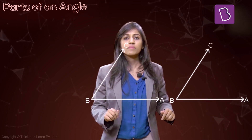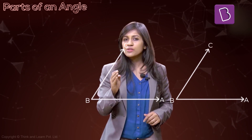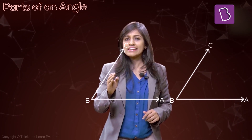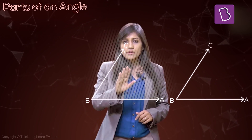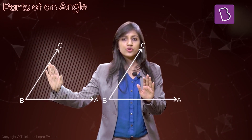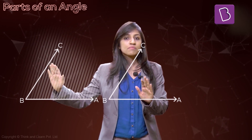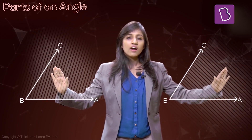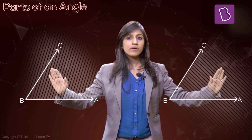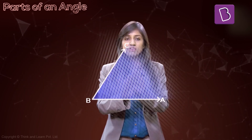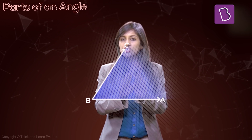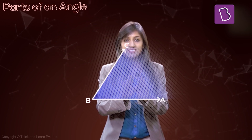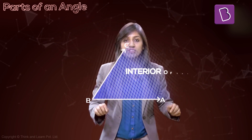Say this angle ABC — I need two copies of it. In one copy, I'm going to shade the part bordering where line segment BA is and covering BC. And in the other copy, I'm going to shade the part bordering where line segment BC is and covering BA. Now that I've got both of them, observe carefully what I'm doing — I'm going to bring them together. The portion which is common to both shadings is what we call the interior of the angle.